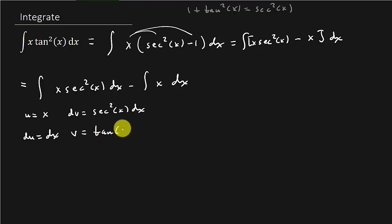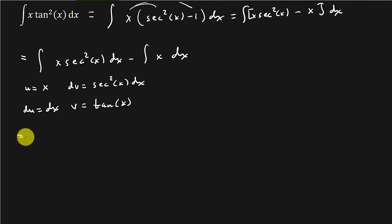And so I get du is equal to dx, v is equal to tangent x. And so now we're going to get, let's see, x times tangent x, it's u times v, minus the integral of du times v. So that's going to be tangent x dx minus the integral of x dx.